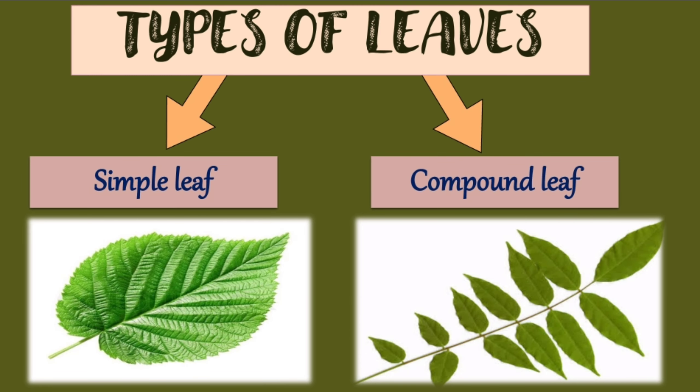There are two types of leaves: simple leaf and compound leaf. Simple leaves have a single leaf blade connected by a petiole — that is, a stalk — to the stem. Compound leaves have a leaf blade divided into a number of smaller leaves to form leaflets, and they are also attached by a petiole to the stem.